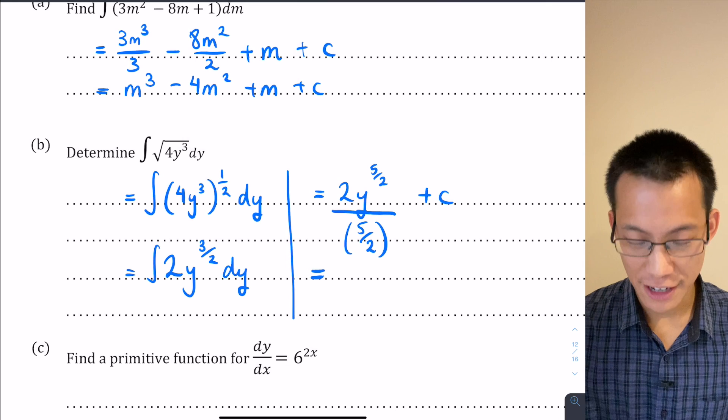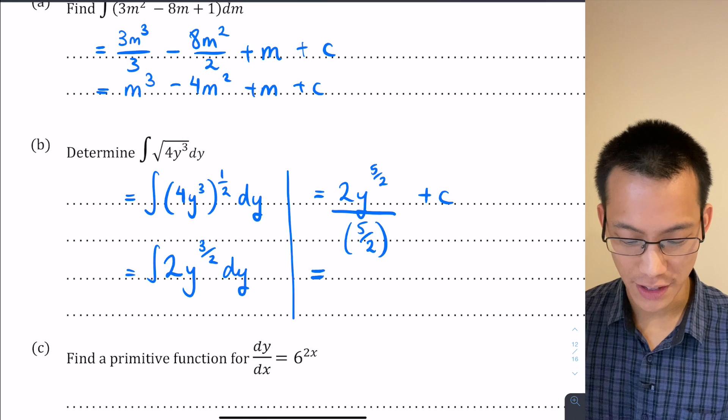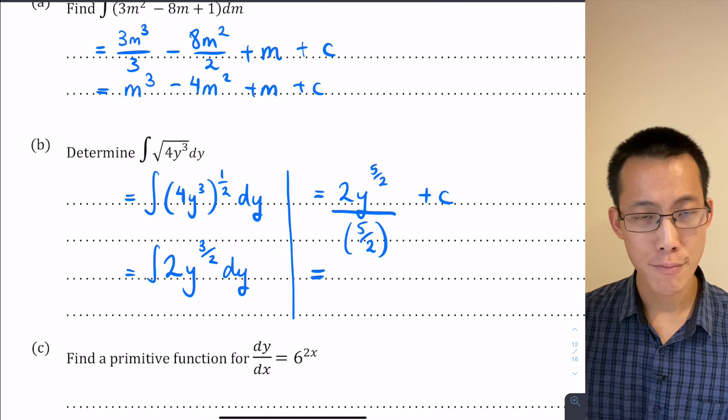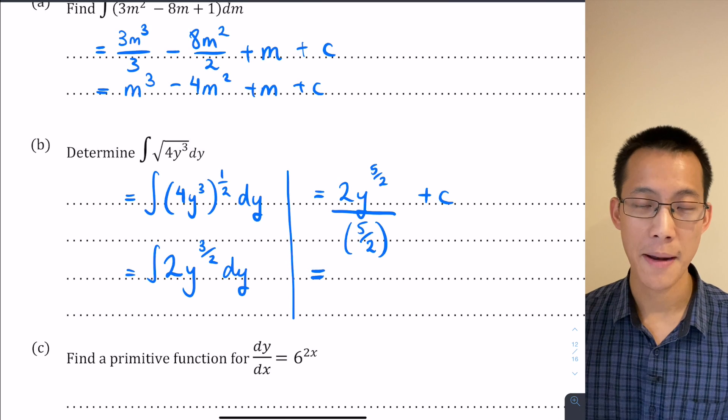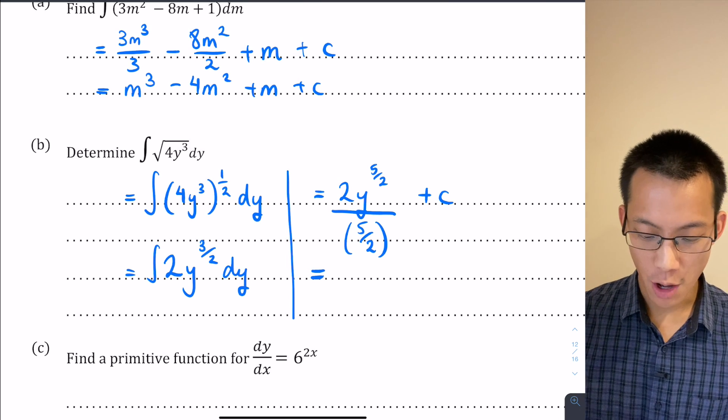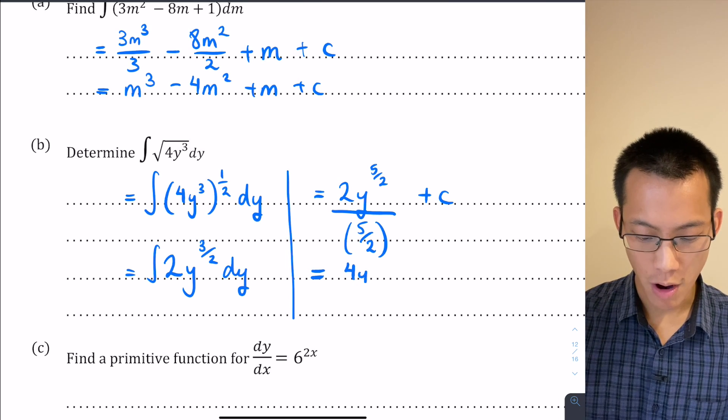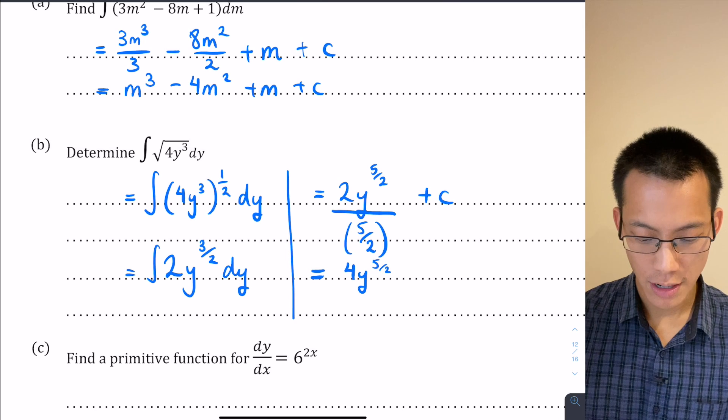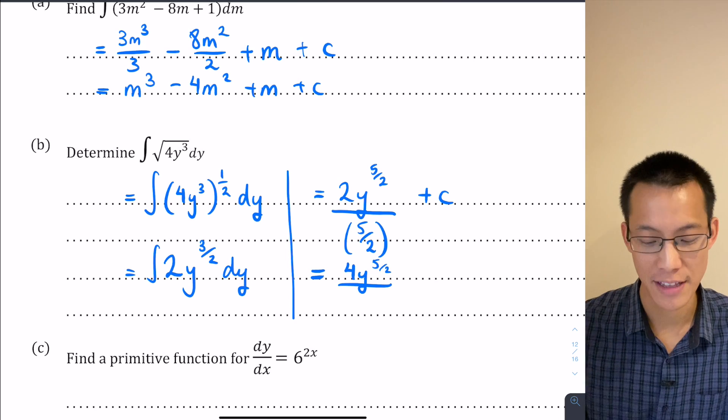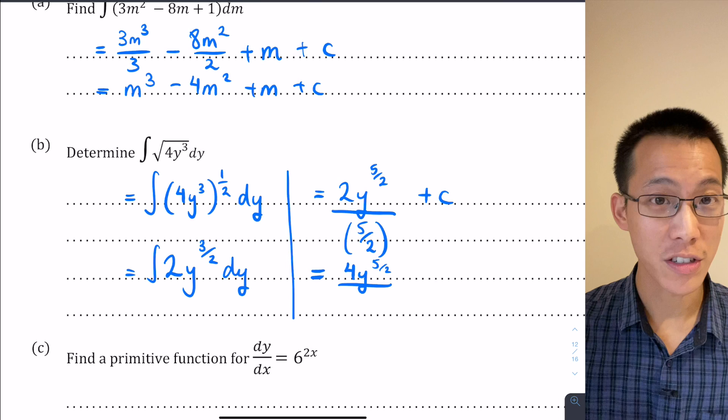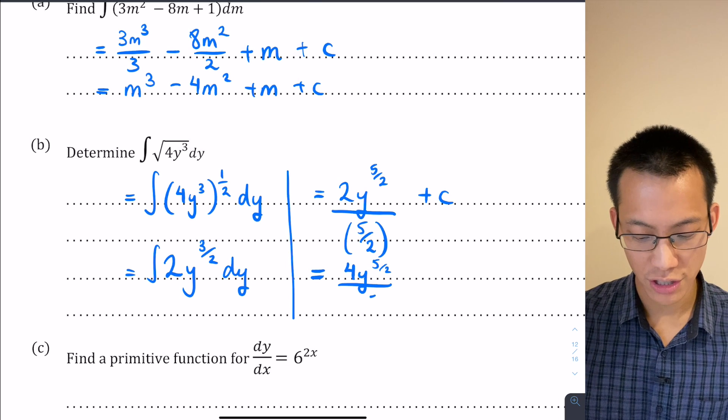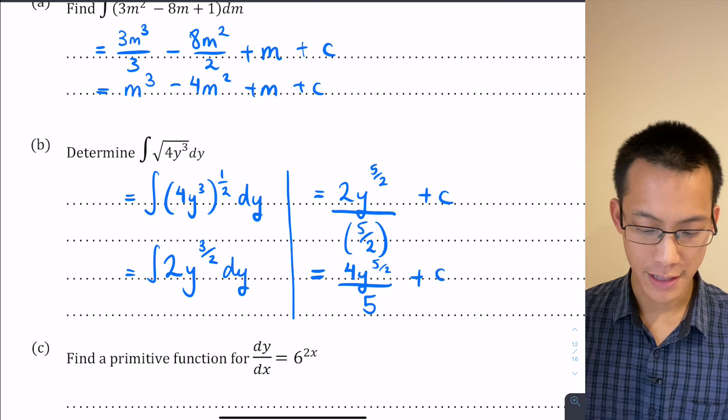Alright, fractions on fractions - that looks disgusting. How do we fix it? Well what I'm going to do is I'm going to multiply the numerator and the denominator both by 2. On the numerator it just gives you 4y to the power of 5/2, divided by, now because I'm multiplying by 2 it cancels the /2 that's in the denominator so you just get 5, and then plus c.